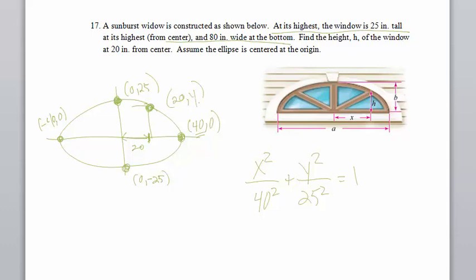So we can do that pretty easily just by plugging in 20 to that x value and then solving. So I got 20 squared over 40 squared plus y squared over 25 squared equals 1. All I do is solve that equation for y and I got an answer.